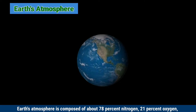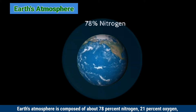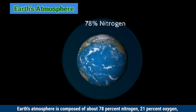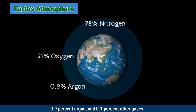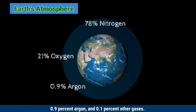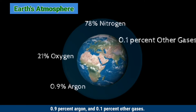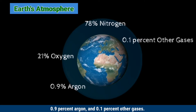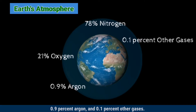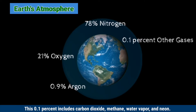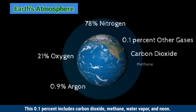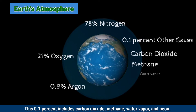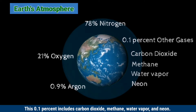Earth's atmosphere is composed of about 78% nitrogen, 21% oxygen, 0.9% argon, and 0.1% other gases. This 0.1% includes carbon dioxide, methane, water vapor, and neon.